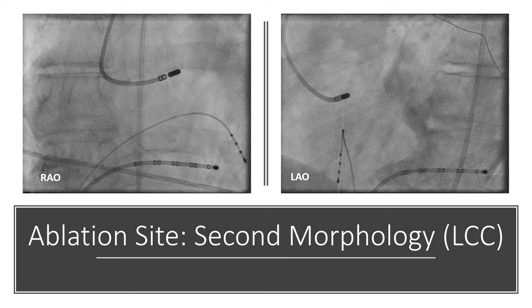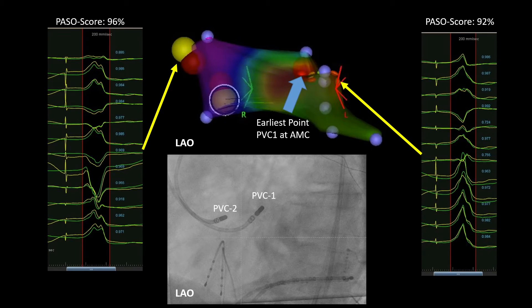RAO and LAO projections in this figure show the successful ablation site of the second morphology in the left coronary cusp. In this final figure, we see the successful ablation sites of both PVCs in the 3D mapping system, along with the best pacemap of the first PVC at aortomitral continuity and the second PVC in the left coronary cusp. In superimposed fluoroscopy images, we see the successful ablation site of the first PVC at aortomitral continuity and the second at the left coronary cusp.